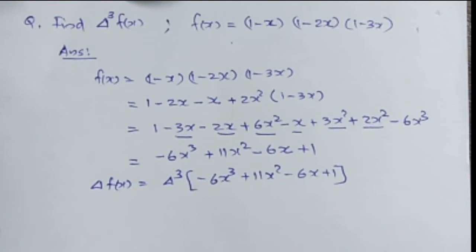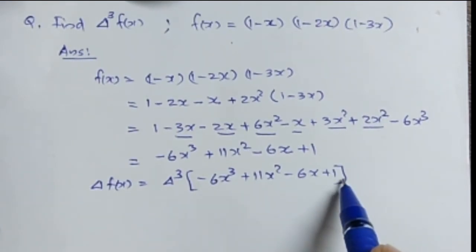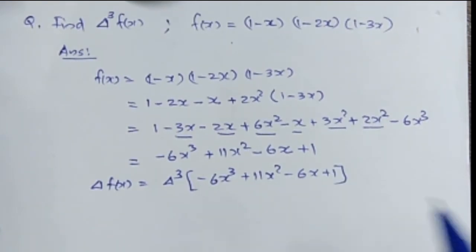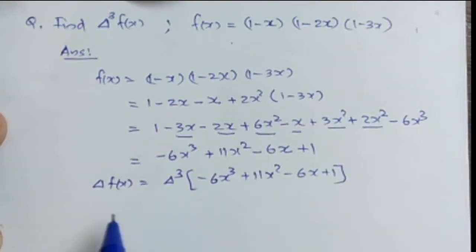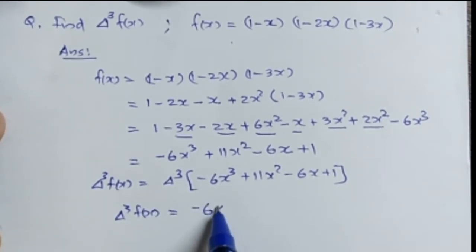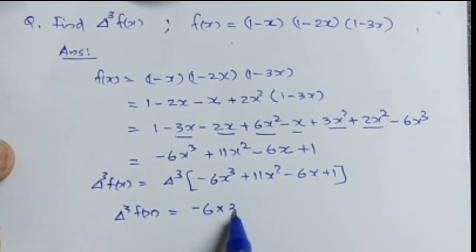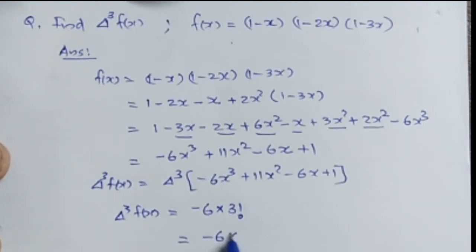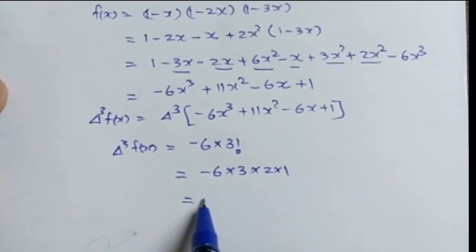When you take the third forward difference, the x² term, the x term, and the constant 1 vanish. What remains is determined by the coefficient of x³, which is -6. So delta³ f(x) equals the coefficient of x³ multiplied by n factorial, where n is the power of x. Here it is 3 factorial, giving -6 × 3 × 2 × 1 = -36.